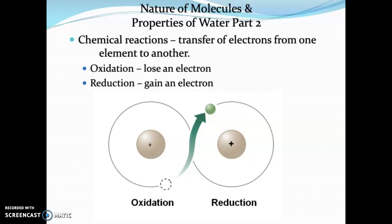So when we look at any kind of chemical reaction in nature, it's the transfer of electrons from one element to another. They're moving around, they're going back and forth. So when an element loses an electron, we say it's been oxidized. When an element gains an electron, we say it's been reduced.